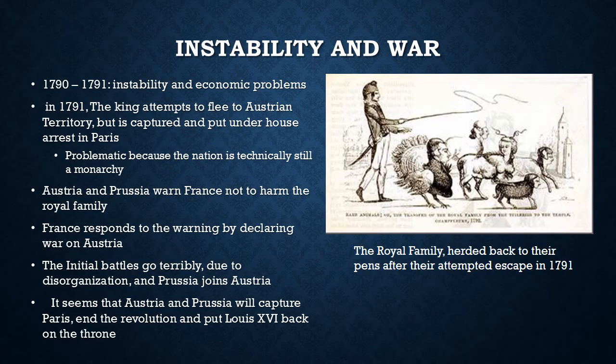With all these new reforms, it seemed like the French Revolution could have stopped there. But there was still a lot of instability — lots of economic problems, rising prices, and shortages of certain important items. These problems probably could have been overcome if the king had not attempted to flee France to Austria.